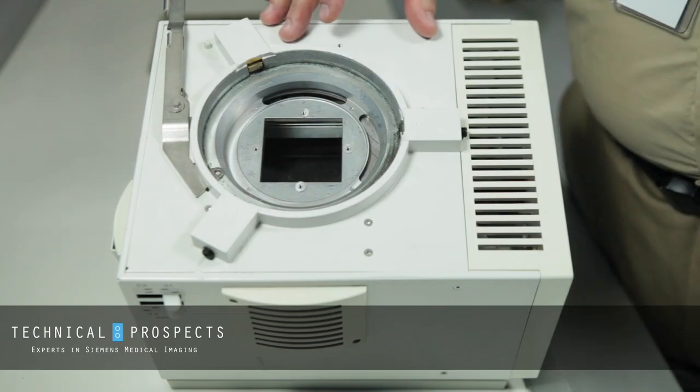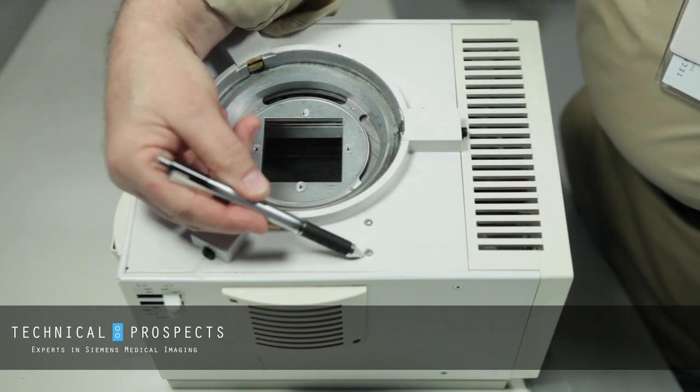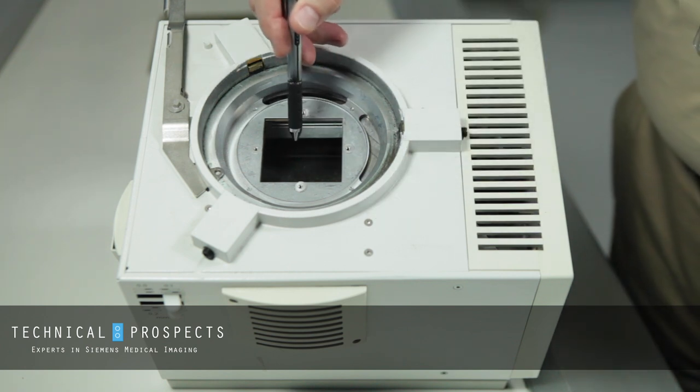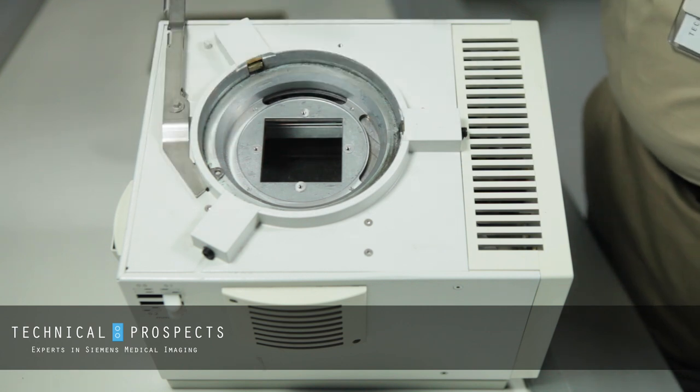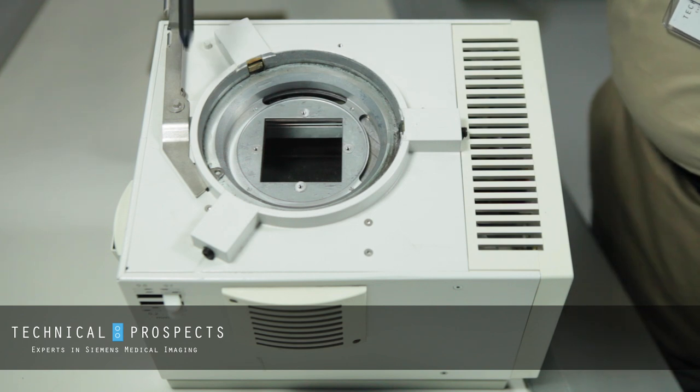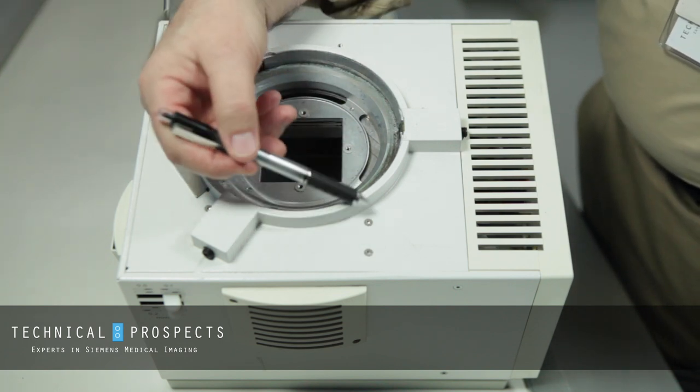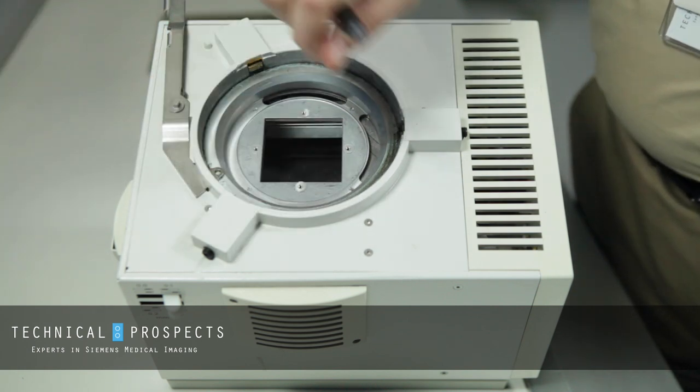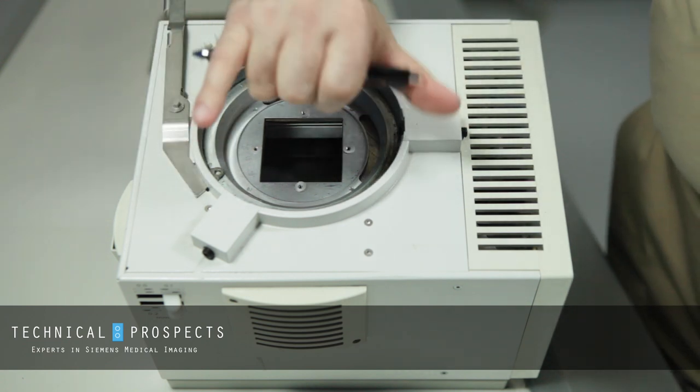This is an older style collimator. We have two adjustment screws here and a fixed screw here. The mirror is where we're going to be adjusting, since we cannot adjust the actual leaf ears inside to change the width or height of the x-ray field, but we can turn this mirror to match it. This is basically an L armature underneath here. This one right here would actually adjust the mirror in this direction, and this one would adjust the mirror in that direction.